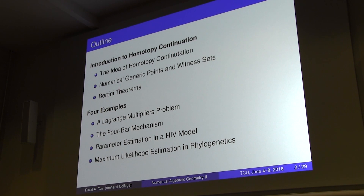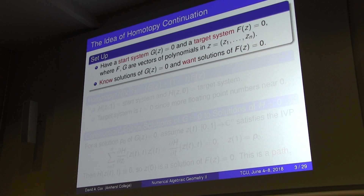To get started: when we do homotopy continuation, the idea is that we have a start system and a target system, where f and g are vectors of polynomials.